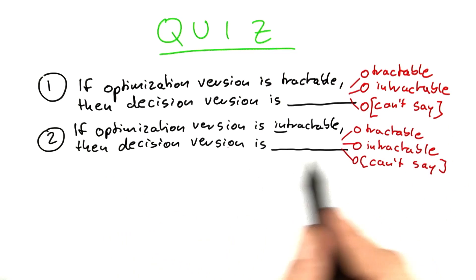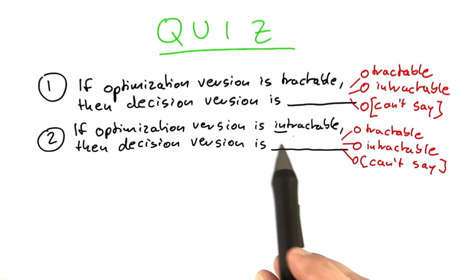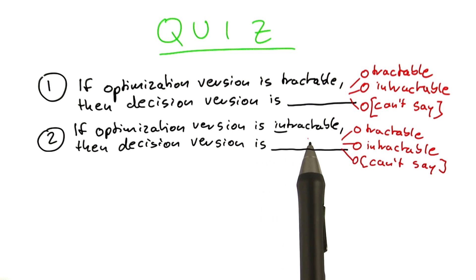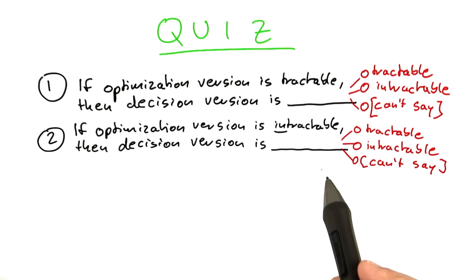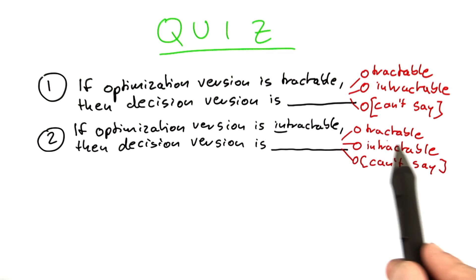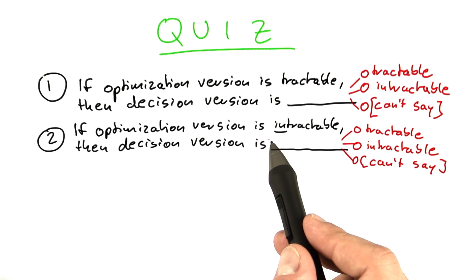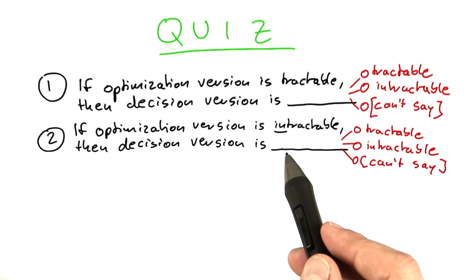Or can't we really say? The second question I have for you is the same thing only with intractability. So if we know the optimization version of a problem to be intractable, then what about the decision version? Is that for sure going to be tractable, intractable? Or is this a case where we can't really make a clear statement having only this information here that the optimization version is intractable?